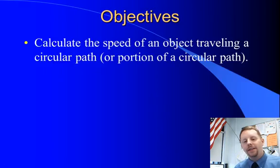So our objective is going to be very short, straightforward. Calculate the speed of an object traveling a circular path or a portion of a circular path.